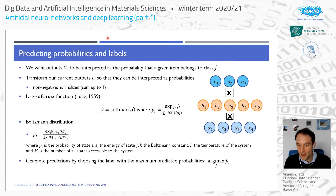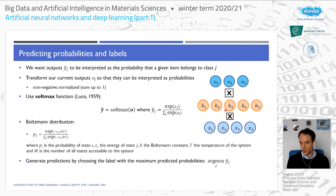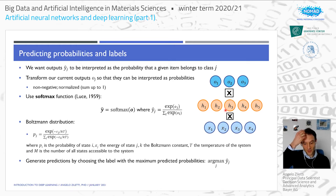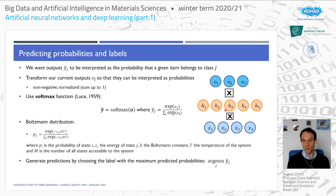Responding to a question about an effective temperature in the softmax function: in the softmax here the outputs are equally weighted, so there's no direct temperature analog. However, in natural language generation there is something like a Boltzmann weighting factor used to predict and generate the next word - that idea is borrowed from the Boltzmann distribution, but in this basic softmax it doesn't apply.